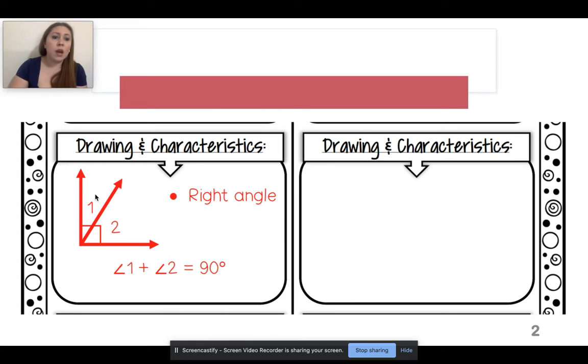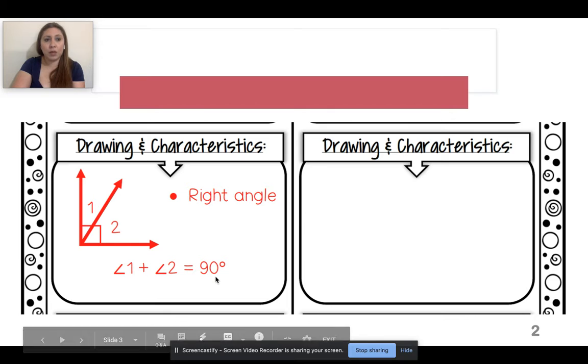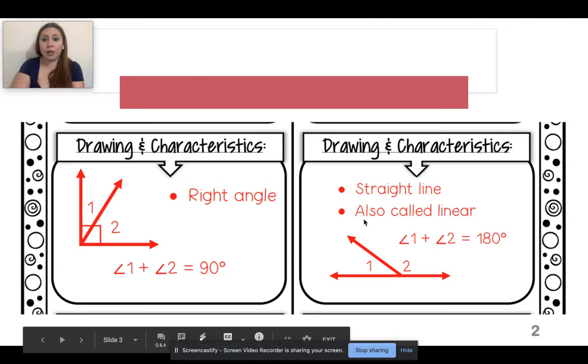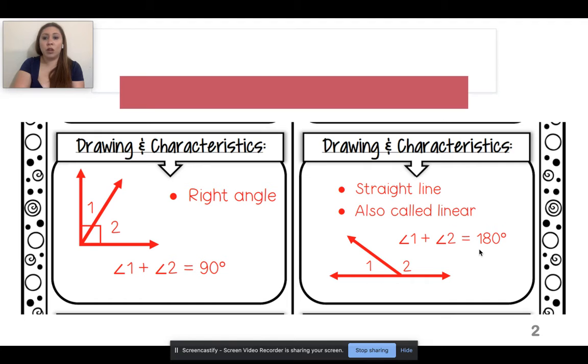So just like I just mentioned, if I'm dealing with complementary, I'm going to add angle one, add angle two. That should create a right angle, which would give me 90 degrees. Supplementary is a straight line, also known as linear. So if I add angle one and angle two, it'll give me 180 degrees.